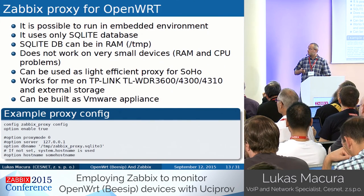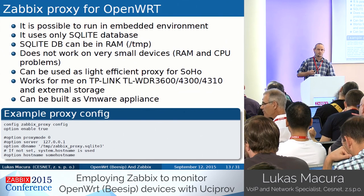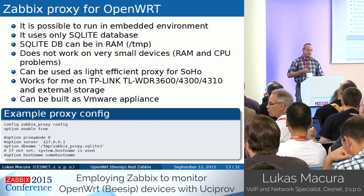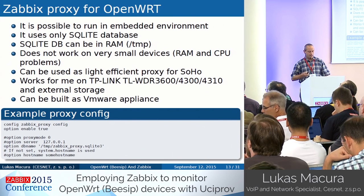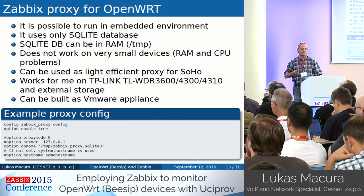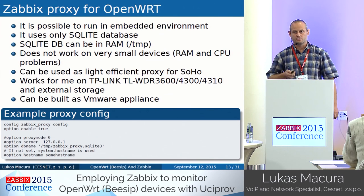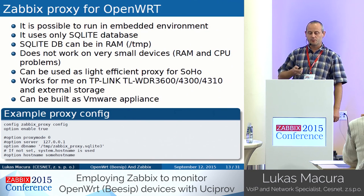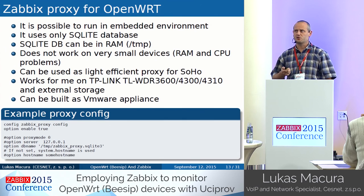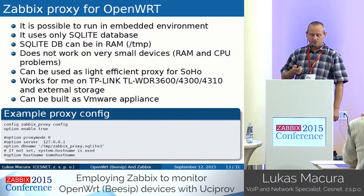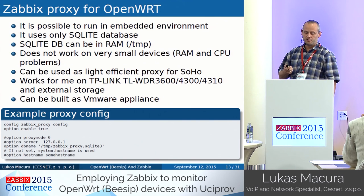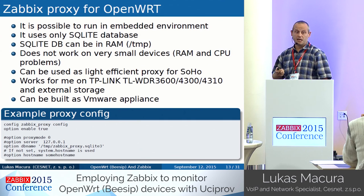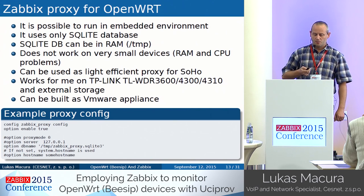During the boot it's possible to run it - you can see the UCI config of Zabbix server as an example. What's more interesting is Zabbix proxy for OpenWrt, and it really works. It's possible to run in an embedded environment, it uses SQLite, and it does not work on very small devices - you need some RAM. It can be used as a lightweight, efficient proxy for home devices or maybe small companies. For me it works on a TP-Link 3600 without problems - yes there is external storage connected, but it works nicely.